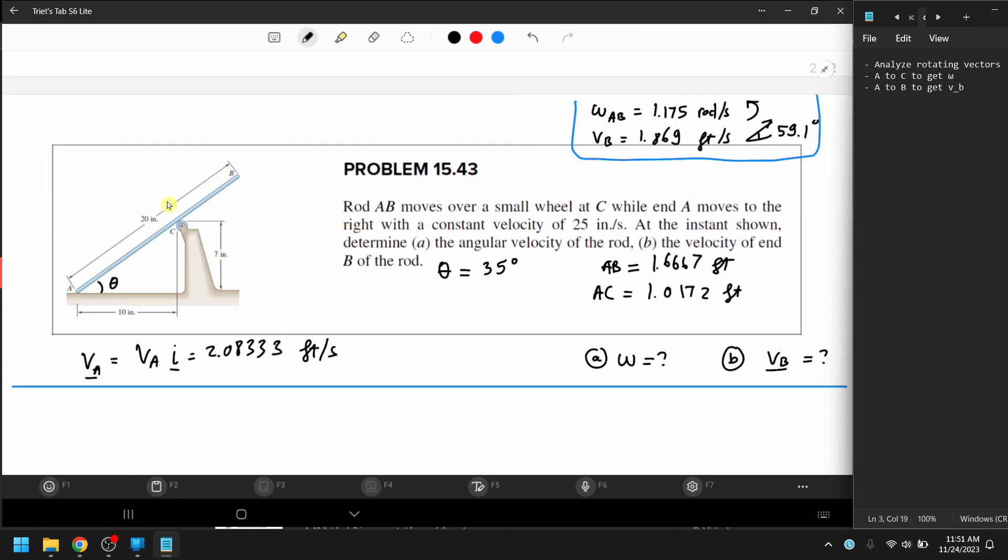we have a rod here on this wheel. I calculated the angle, it's a tangent inverse, you got to be 35 degrees. Convert AB 20 inch into 1.6667 feet, just because the velocity is in feet per second. And AC, you can do a Pythagorean theorem, and then you calculate this hypotenuse, you get AC, and it's going to be 1.0172 feet.